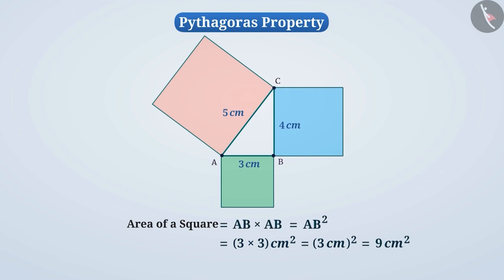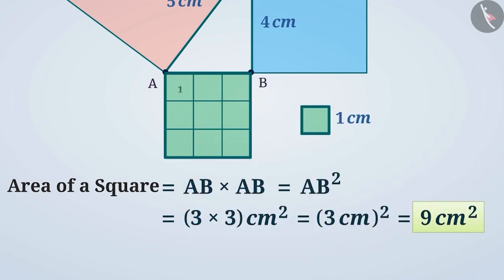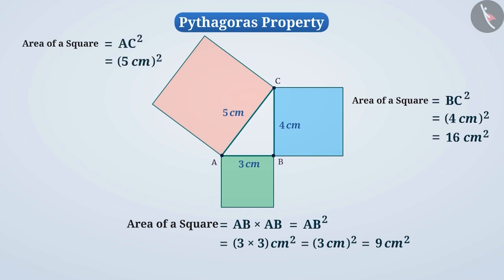Note that a square with area 9 cm² has a total of 9 unit squares of side 1 cm in it. Generally, how many unit squares of side 1 cm can be drawn in a figure is known as the area of that figure. Now let's find the area of a square of side 4 cm: BC² = 4² = 16 cm². Similarly, the area of a square of side 5 cm is AC² = 5² = 25 cm².